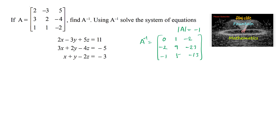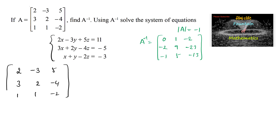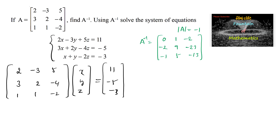Now let's solve the system of equations. The given equations 2x - 3y + 5z = 11, 3x + 2y - 4z = -5, x + y - 2z = -3 can be written in matrix form as AX = B, where A = [2,-3,5; 3,2,-4; 1,1,-2], X = [x; y; z], and B = [11; -5; -3].